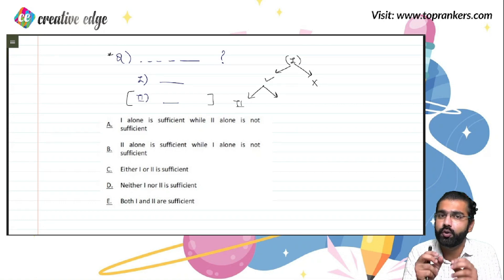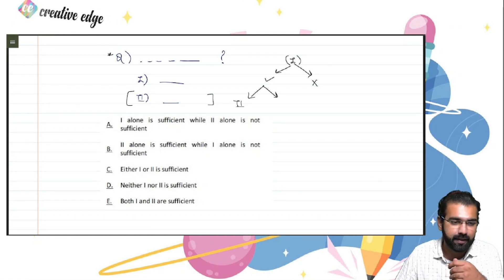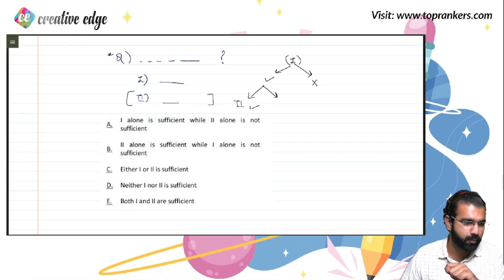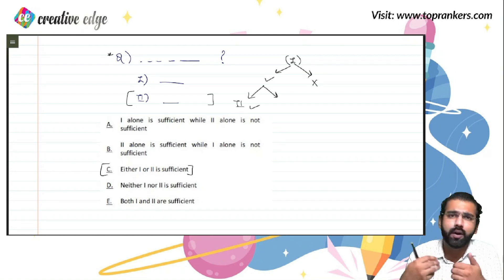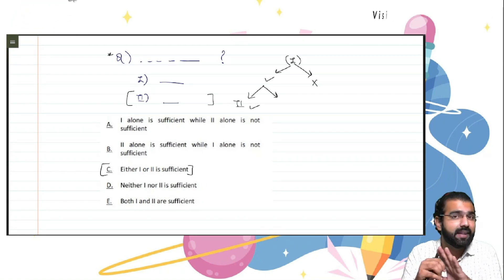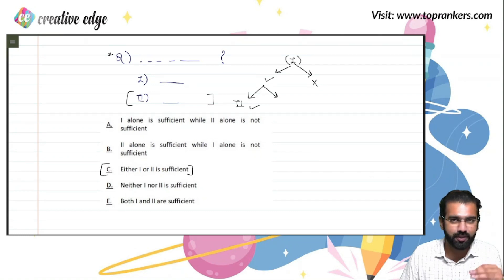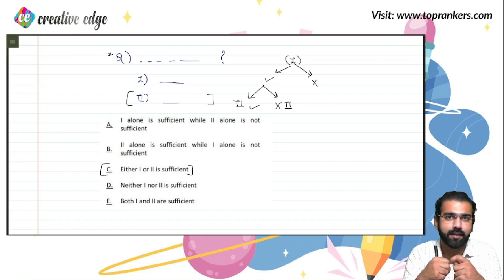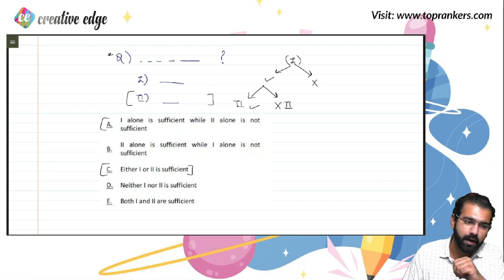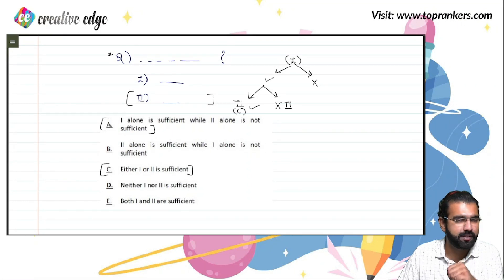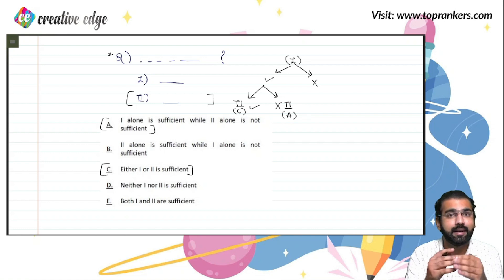When you try to solve it through statement 2 alone and you are capable of solving it with statement 2 alone as well, then either statement 1 or statement 2 is sufficient — the question can be solved with either of these statements. In that case, option C is what you are supposed to mark. However, if statement 2 alone is not sufficient to solve the question, you are supposed to mark option A.